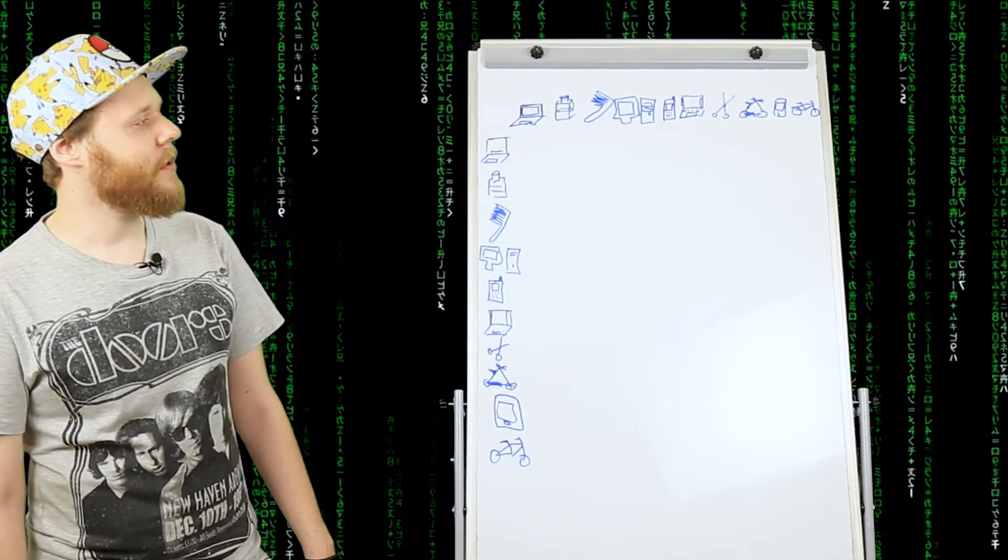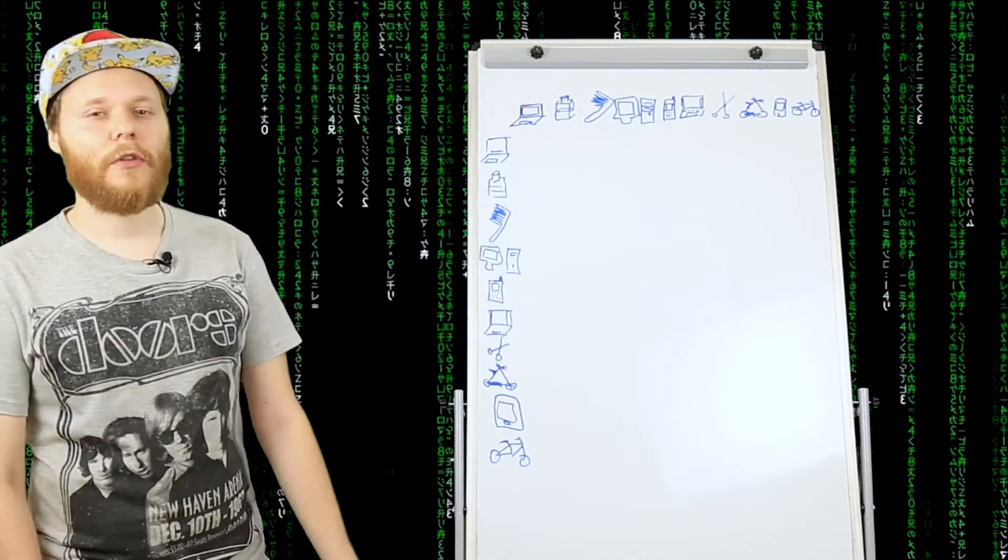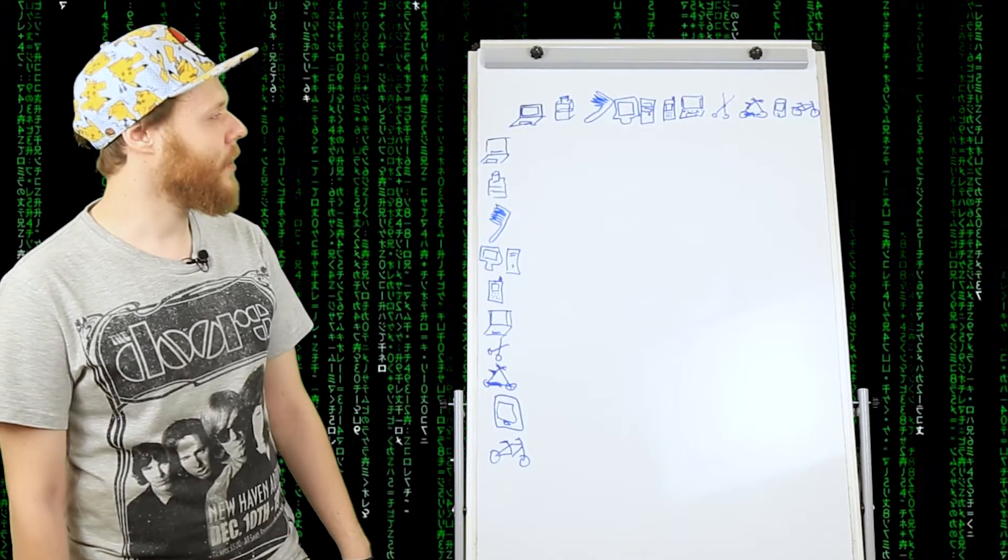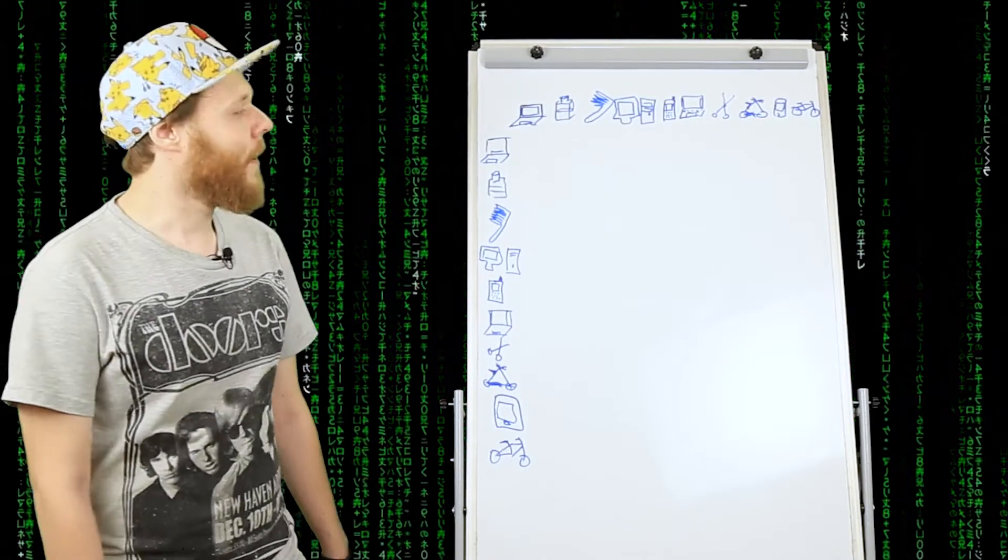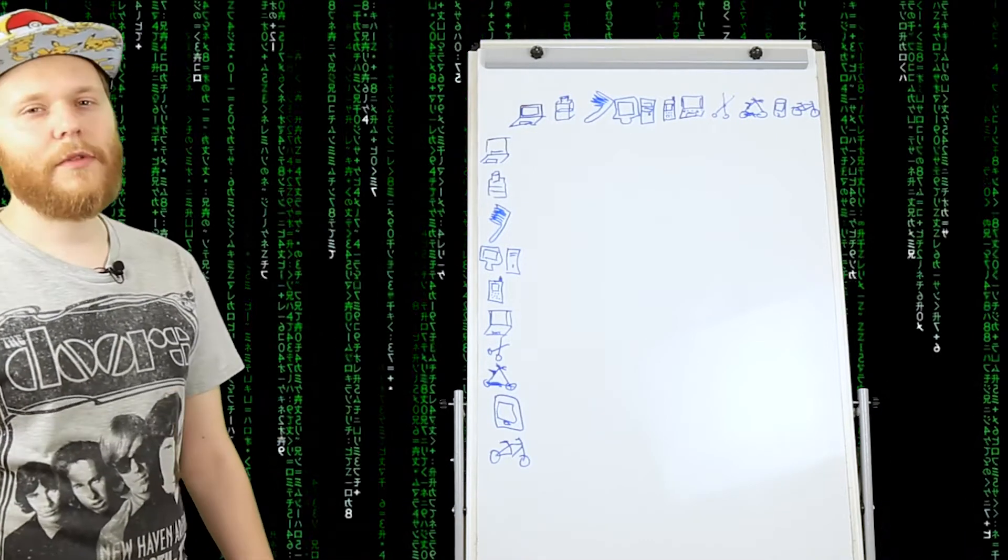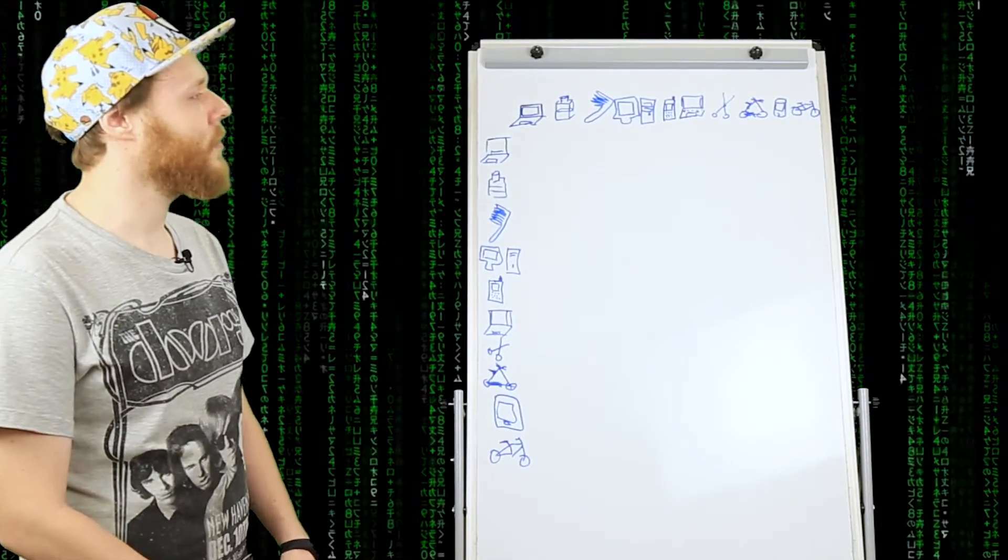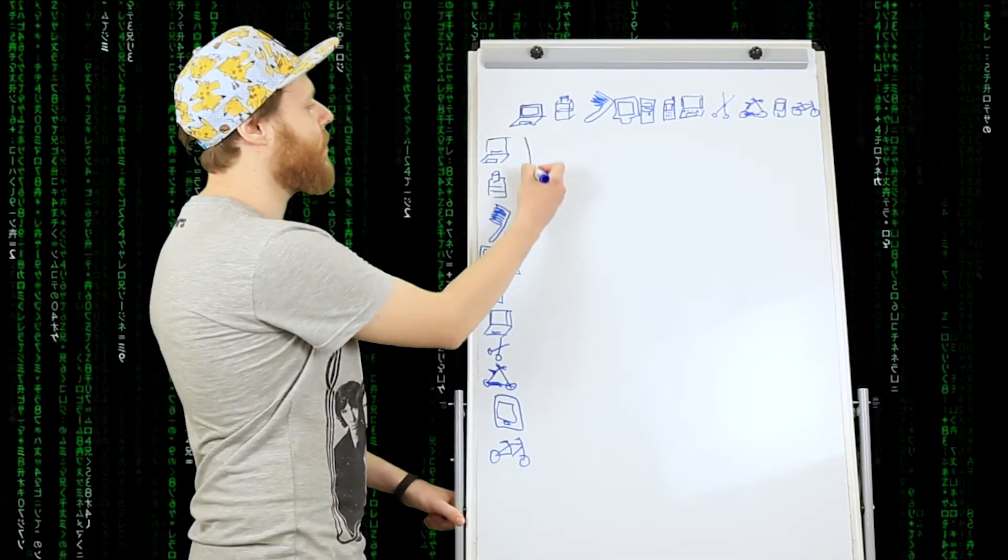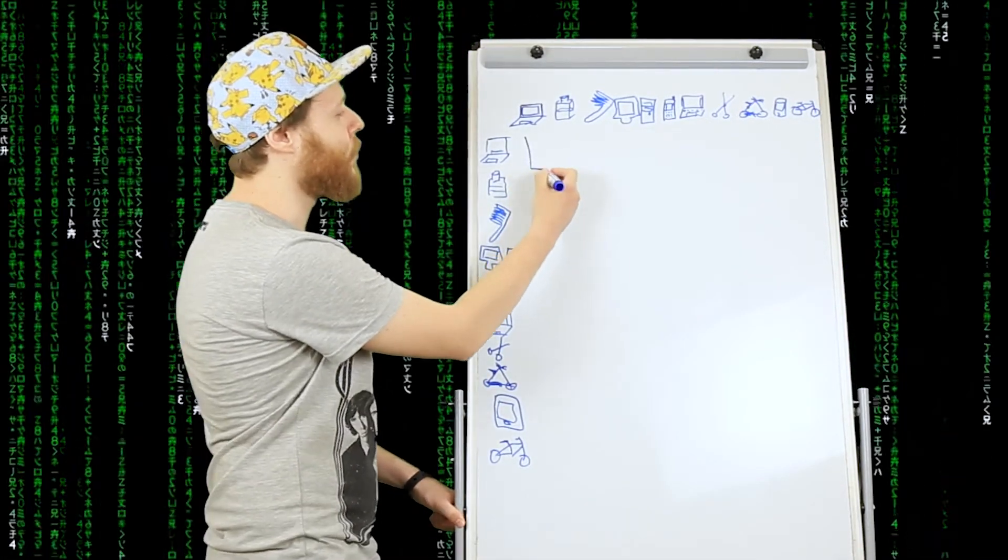Предположим, вы хотите объединить какие-то вещи на одной странице, например, ноутбуки или компьютеры. Для этого вы можете провести кластеризацию. Большинство сервисов делают это следующим образом. Они находят объекты с максимальной частотностью и для каждого из них ищут другие,